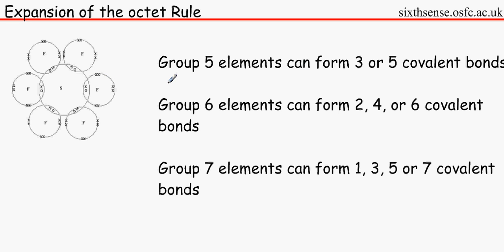But you should just remember that group 5 elements can form 3 or 5 covalent bonds. Group 6 elements can form 2, 4 or 6. And group 7 elements can form 1, 3, 5 or 7 covalent bonds.